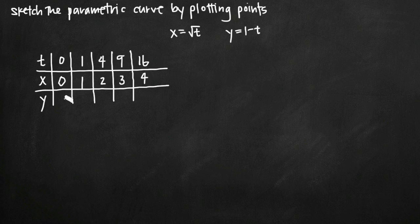So 1 minus 0 just gives us 1, 1 minus 1 gives us 0, 1 minus 4 gives us negative 3, 1 minus 9 gives us negative 8, and 1 minus 16 gives us negative 15.